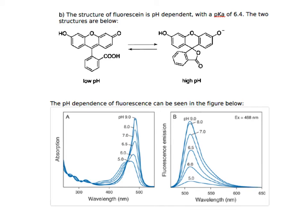The structure of fluorescein is pH-dependent, according to the equilibrium shown on screen. At low pH, the system is highly conjugated and has a single bond that allows for rotation between the three fused rings and the other ring. Whereas at high pH, the structure changes into a more rigid form with the carboxylic acid forming an ester bonded to the ring. The increased rigidity at high pH is associated with an increase in fluorescence, because there are fewer non-radiative energy de-excitation mechanisms, which we can see in the figures below.